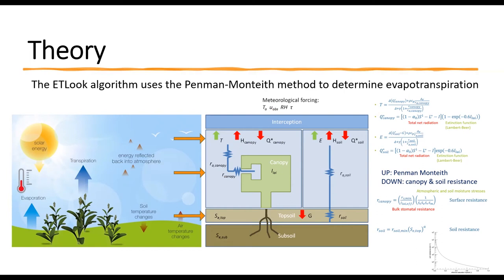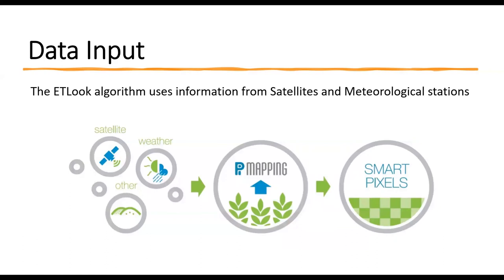Passive microwaves in the electromagnetic spectrum provide information on topsoil moisture. A soil moisture algorithm can then estimate the subsoil moisture.